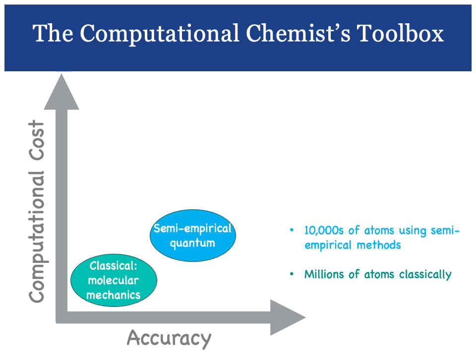But if we want to understand bond-making and bond-breaking, we need to use quantum chemistry. Now we can simplify the equations of quantum chemistry by fitting to experimental data, to give us semi-empirical methods, where we can do calculations of tens of thousands of atoms in a reasonable time.